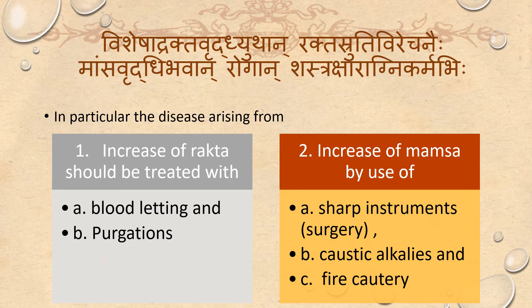Vishesa treatments for specific Dhatus: increase of Rakta should be treated with bloodletting — Rakta Srutihi Virejanaihi. In increase of Mamsa, we use sharp instruments (Shastra), caustic alkalis (Kshara), and Agnikarma (fire therapy). Increase of Mamsa — therapies indicated for obesity; decrease of Meda — therapies indicated for emaciation.